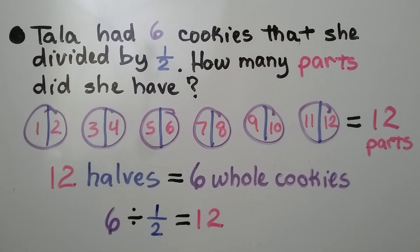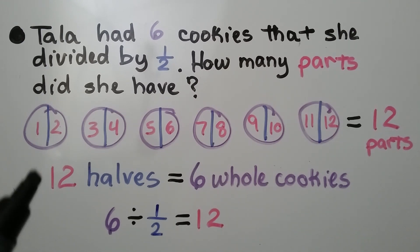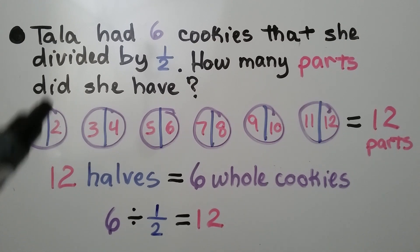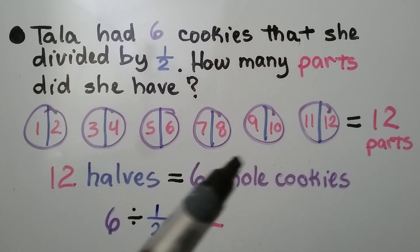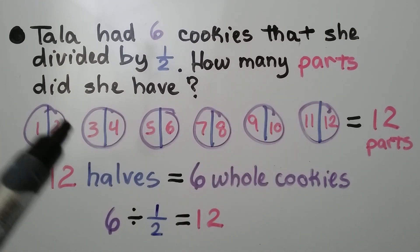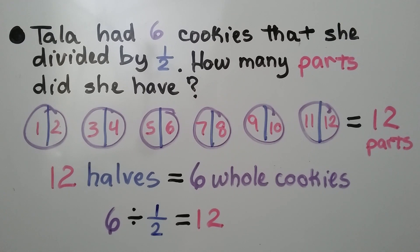Tala had six cookies that she divided by half. How many parts did she have? We can draw six circles for the six cookies, split each of them in half, and count how many parts we have. There are twelve parts — that's twelve halves, which is equal to six whole cookies. So six divided by half is equal to twelve.